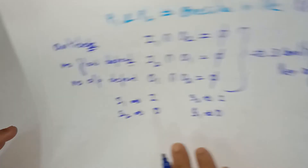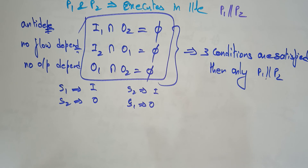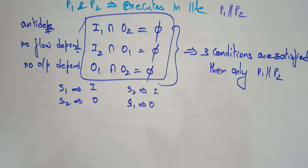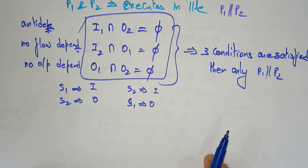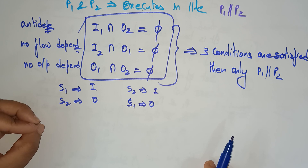To summarize this introduction: remember that I1 ∩ O2 = ∅, I2 ∩ O1 = ∅, and O1 ∩ O2 = ∅ — no common elements in any of these intersections — means those two processes can execute in parallel. If any one condition fails, the two processes cannot execute in parallel. With the help of Bernstein's conditions, we can easily identify whether a program can execute in parallel. In the next video I will take an example and also explain the hardware structure of this representation.